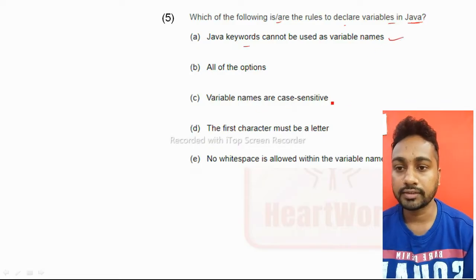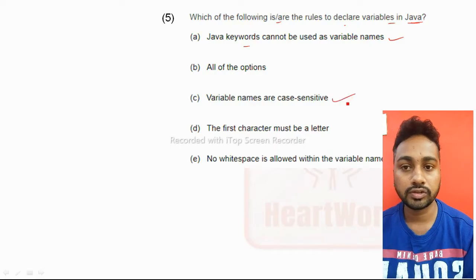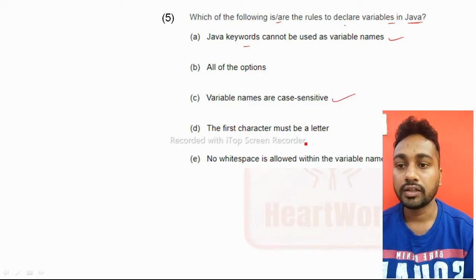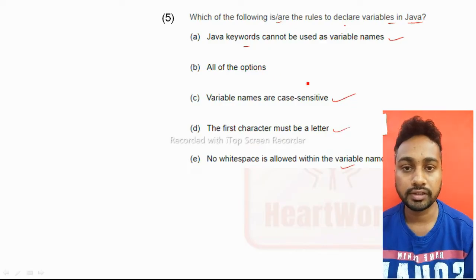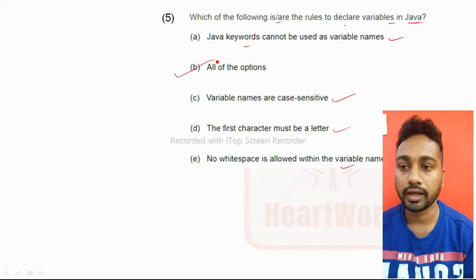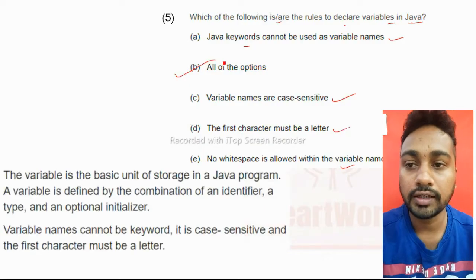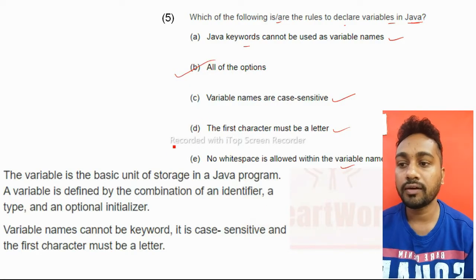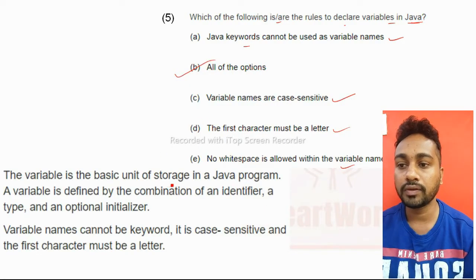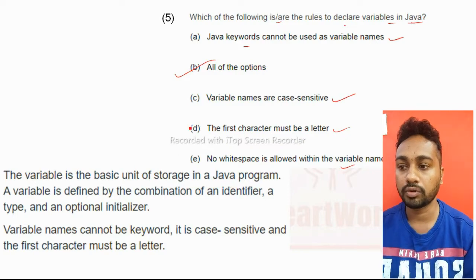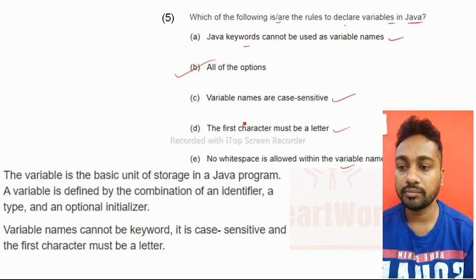The first character must be a letter, this is also right. No white space is allowed within the variable name, this is also right regarding the variables in Java. So all the options are right, option B is the right answer. Variable is the basic unit of storage in a Java program. A variable is defined by the combination of an identifier, a type, and an optional initializer.